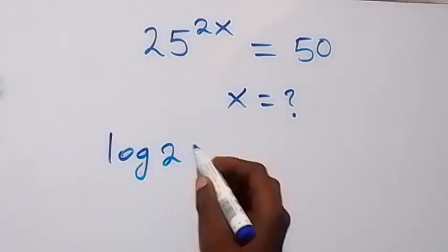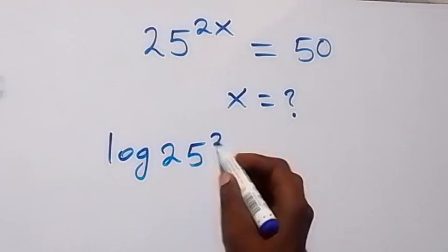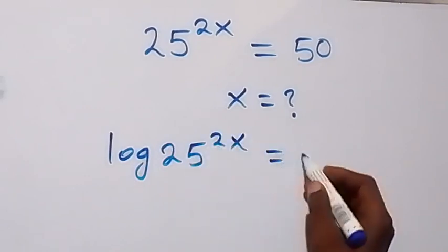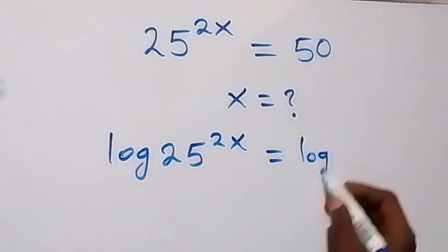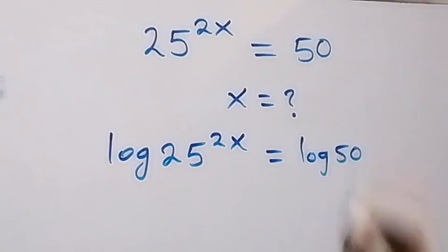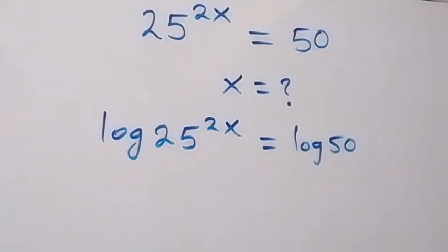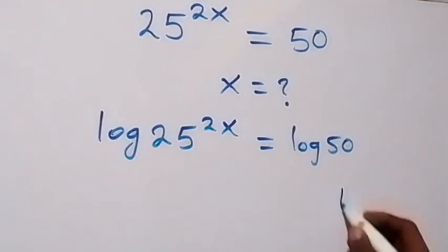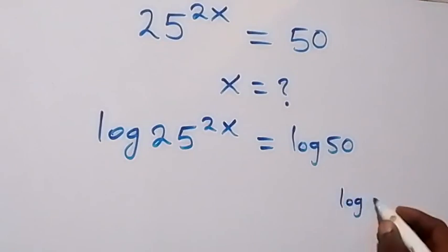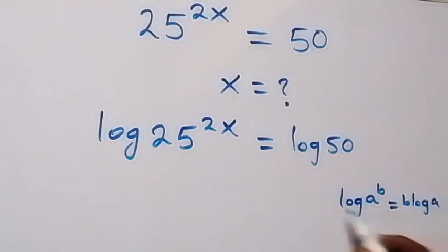We have log 25 raised to power 2x equals log 50. And from here, we apply the law of logarithms. When we have log a raised to power b, here b we can take it and this will be b log a.